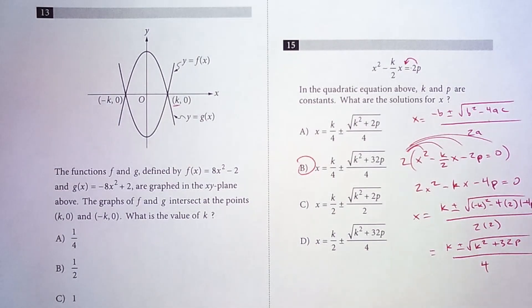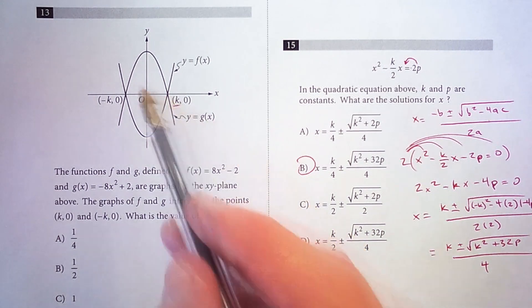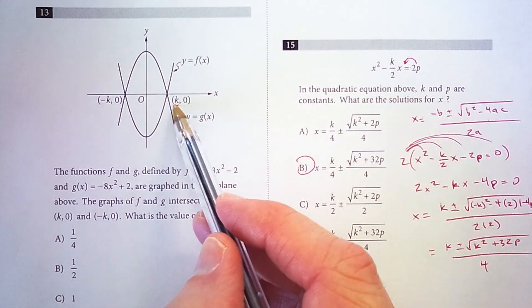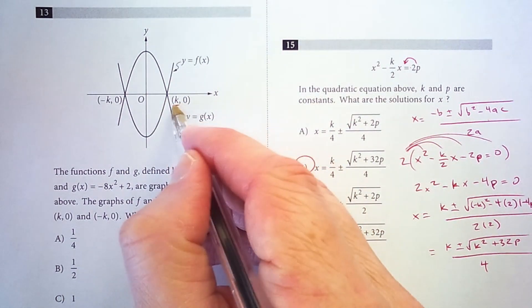Welcome back. For today's SAT math problem, we are on a no calculator test. The functions f and g are defined by these equations for f(x) and g(x). They are graphed in the xy-plane above. The graphs of f and g intersect at the points (k, 0) and (-k, 0). What is the value of k?